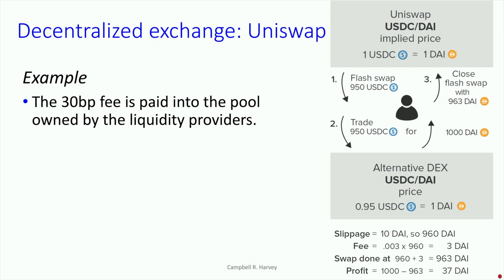This is all done in one transaction. It is arbitrage because you make some money without taking a lot of risk. And again, this is atomic — at any point if something fails, we return to the original state.